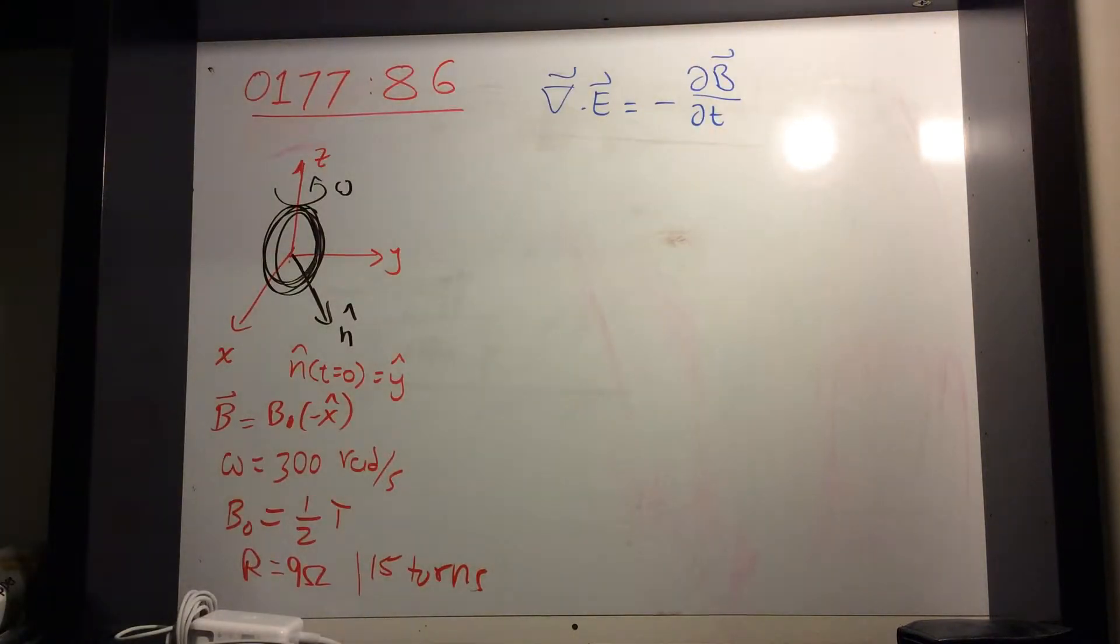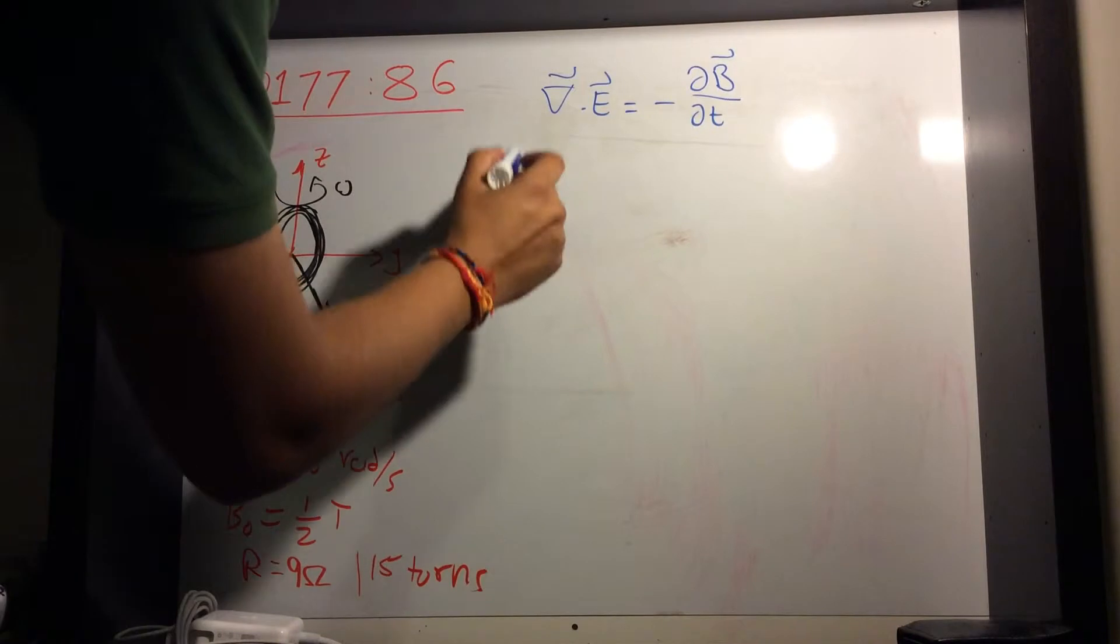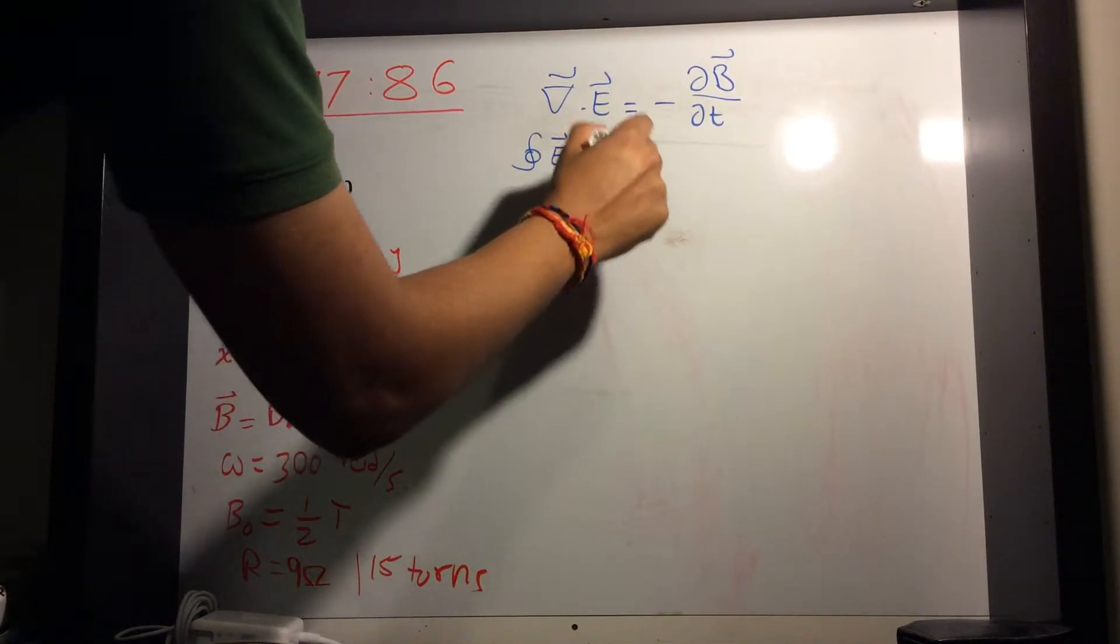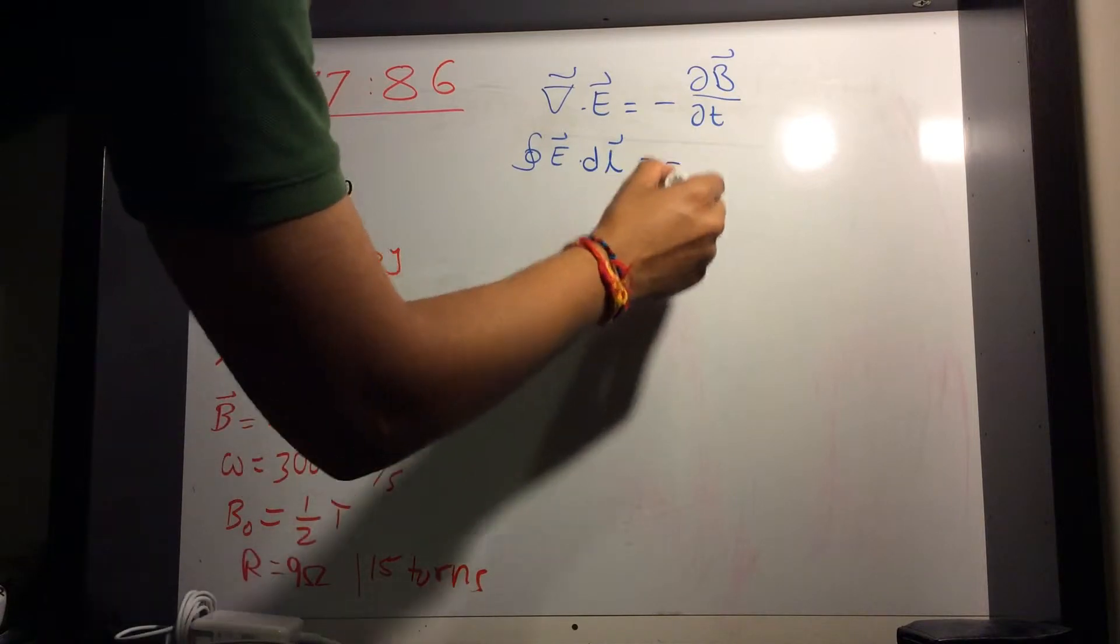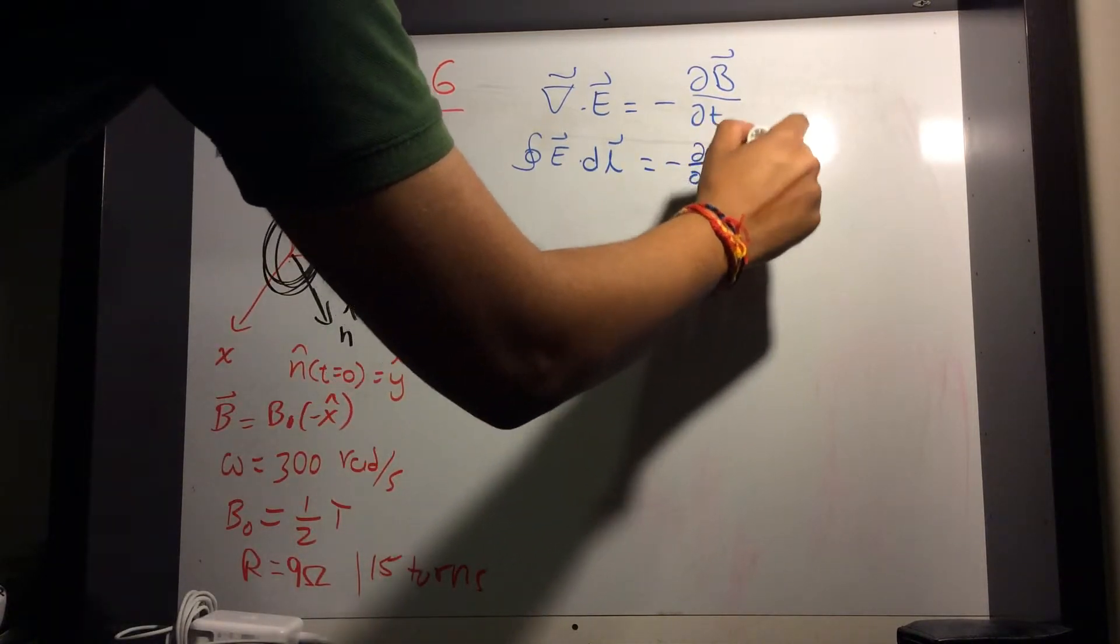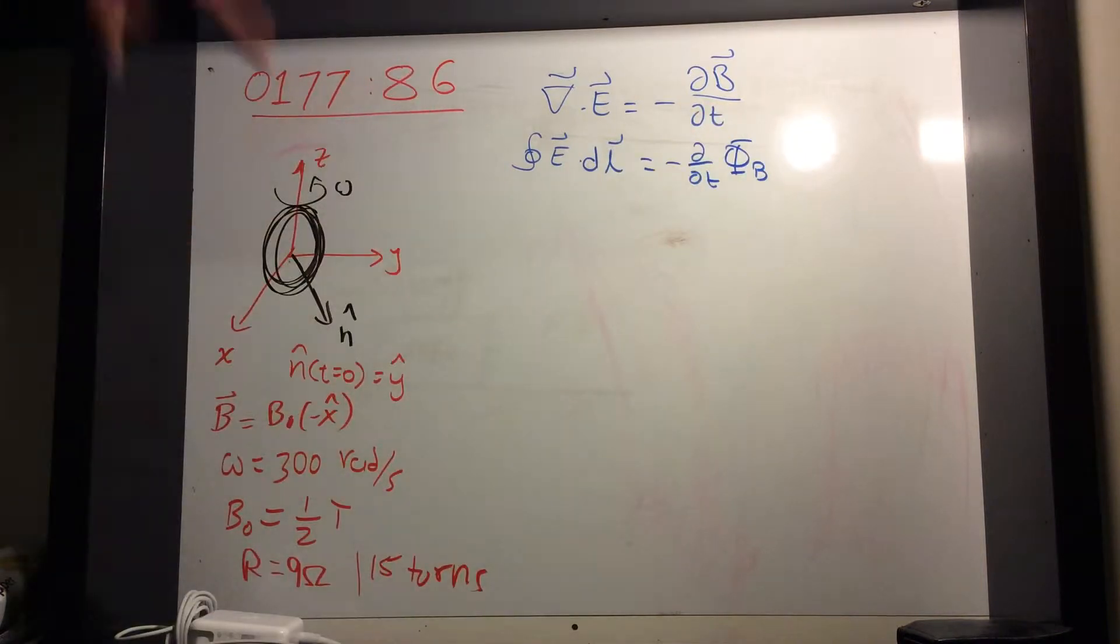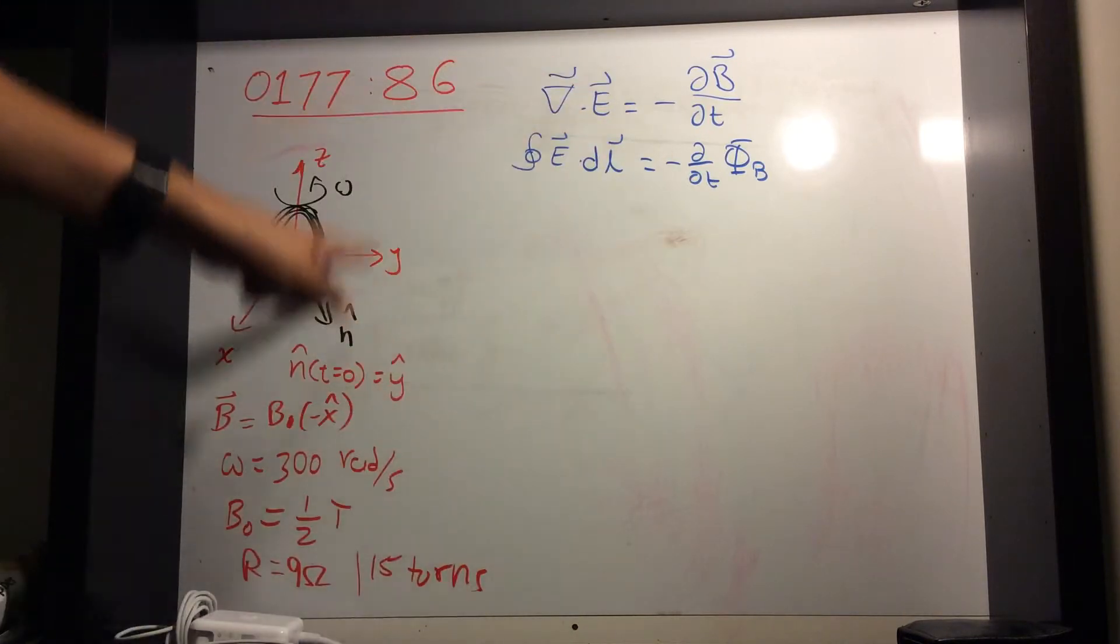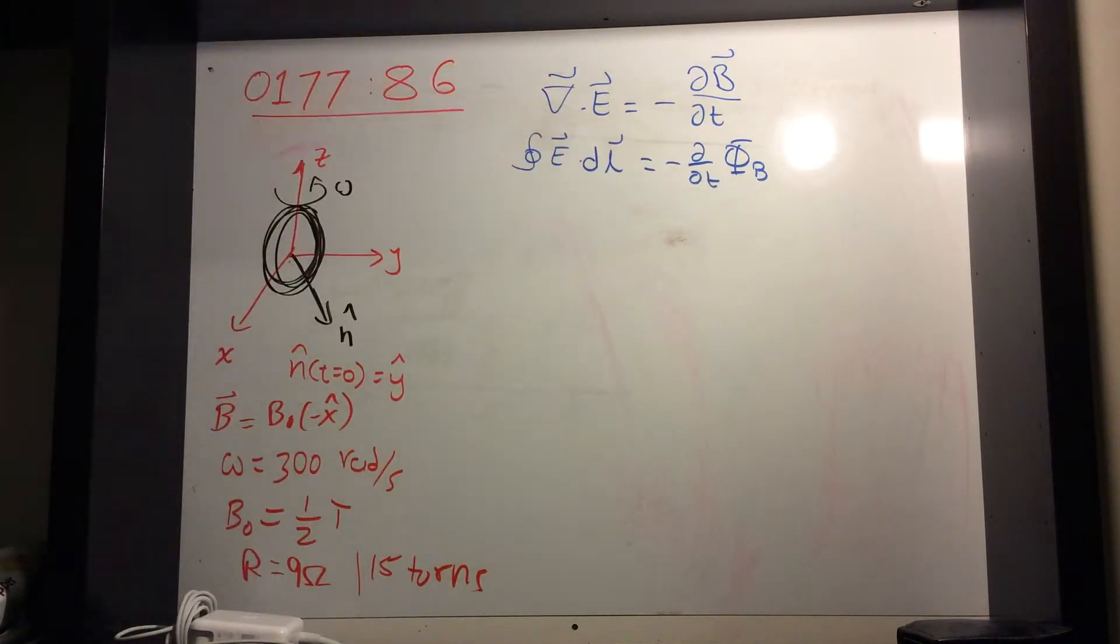And this could be converted to integral form, which would say closed loop integral of E dot dl is equal to minus d/dt of magnetic flux. Now how do you convert this? You can look that up.